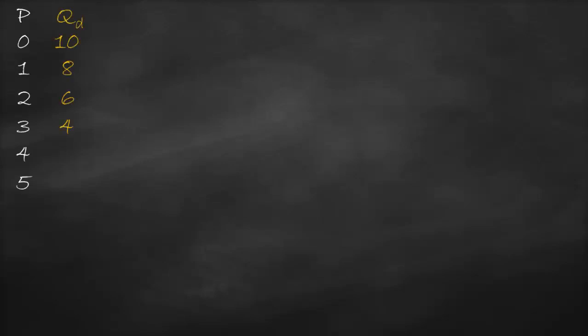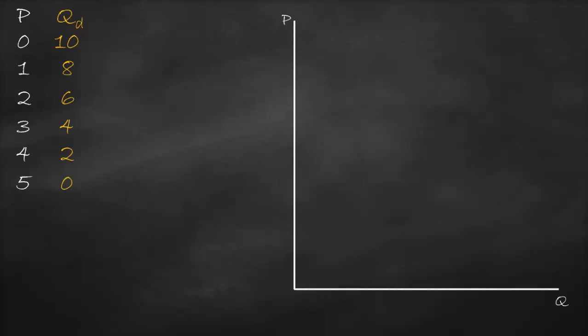This video is about calculating price elasticity of demand at each point on the demand curve. For our numerical example, the price ranges from 0 to 5 and the quantity demanded from 10 to 0. The y-axis is price and the x-axis is quantity. At price 0, quantity demanded is 10; at price 1, it's 8; at price 2, it's 6; at price 3, it's 4; at price 4, it's 2; and at price 5, it's 0.